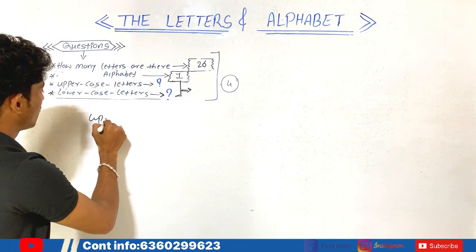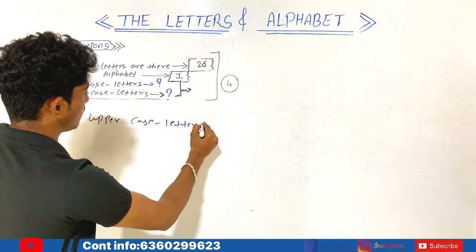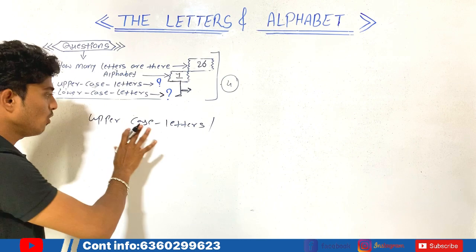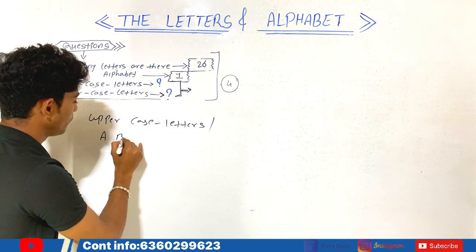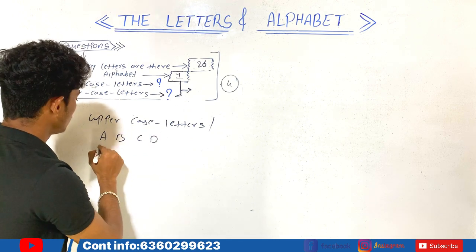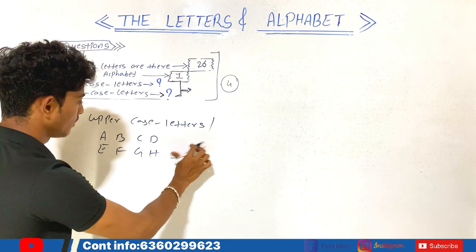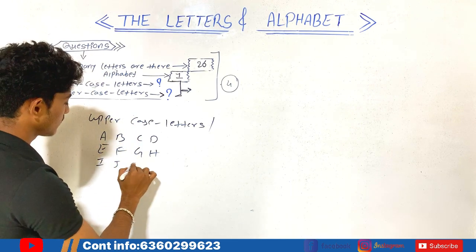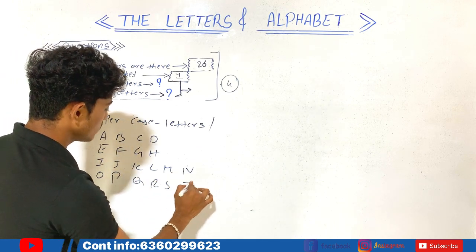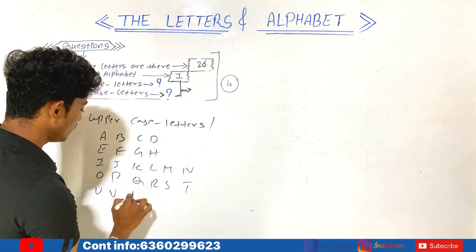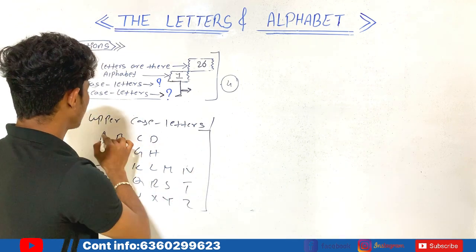Let's write the uppercase letters and see how they look: A, B, C, D, E, F, G, H, I, J, K, L, M, N, O, P, Q, R, S, T, U, V, W, X, Y, Z. The uppercase letter is nothing but the capital letter.